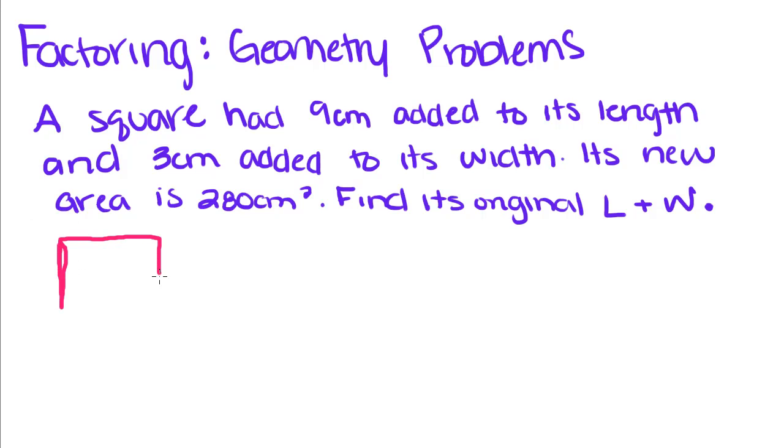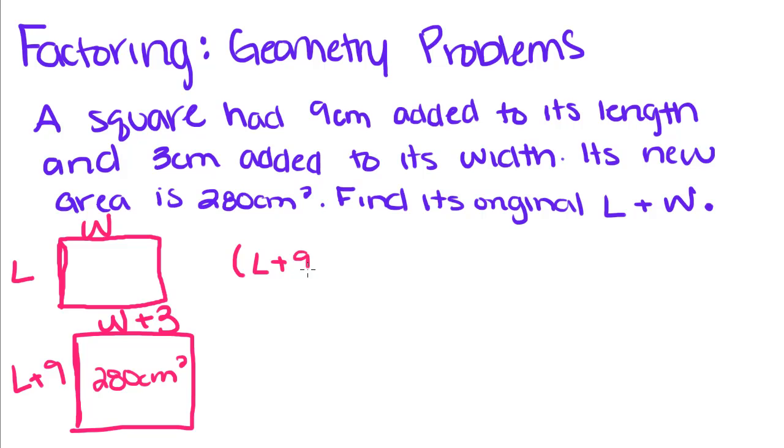So first we had a square that had a length and width, and now we have a new square whose length is L plus 9 and W plus 3 for its width. Since it's a square, that means that this length and width are equal. So we're going to represent this with an X here instead of an L and an X here instead of a W. So this is X plus 9 and this is X plus 3.